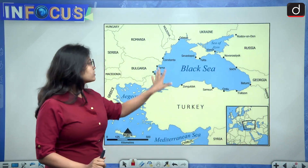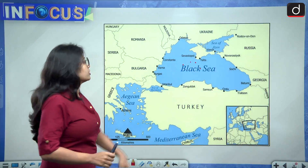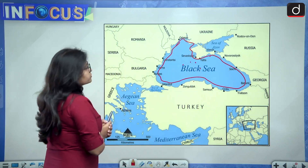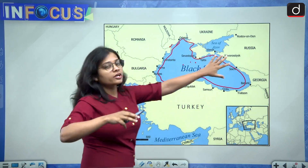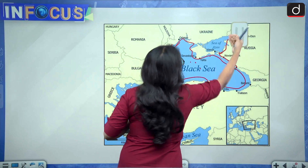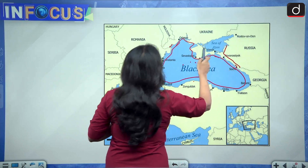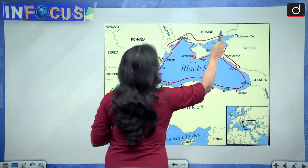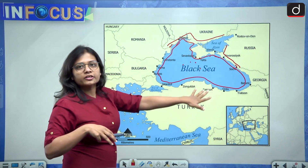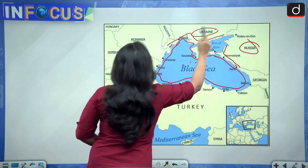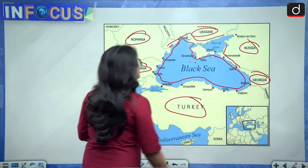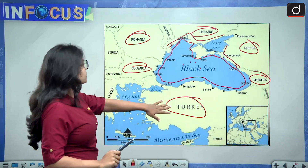Before moving forward, look at this image — this is the Black Sea. In this Russia-Ukraine war, the Black Sea has played a major role. If you see, the Black Sea shares its borders with both Russia and Ukraine — Ukraine shares its southern border with the Black Sea. The countries bordering the Black Sea are Russia, Ukraine, Romania, Bulgaria, Turkey and Georgia — so there are six countries which border the Black Sea.